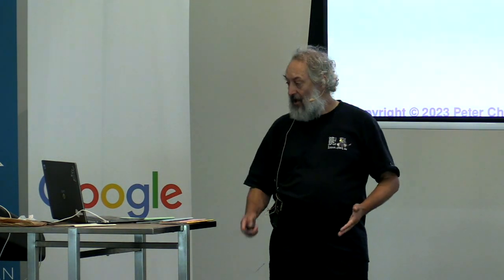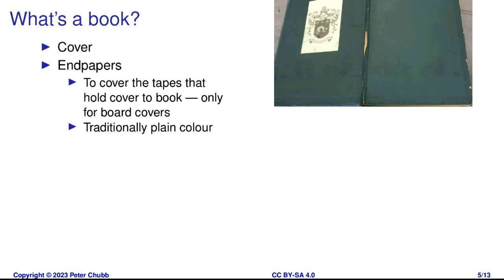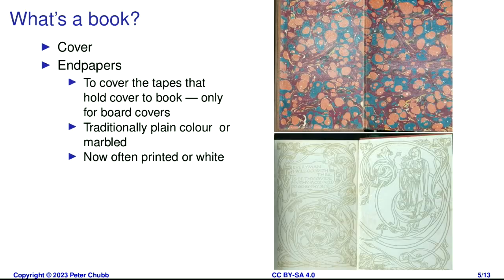If you open the book, you see the end papers. When you've got a hardcover book, you tend to glue across the spine sheets of gauze, like you use with bandages, and then use that to glue the covers on. If you just do that, you can see the bits of gauze and it looks really ugly. So what publishers do is put a piece of paper across the whole of the inside — that's your end paper. Traditionally they were a plain colour. Around the 1890s, marbled covers started becoming really popular, and then in the early 1900s some publishers started using printed end papers. Modern editions tend to be just plain white or printed with something relevant to the inside of the book.